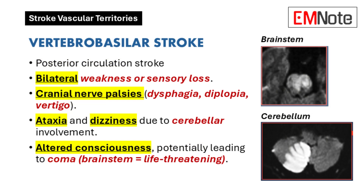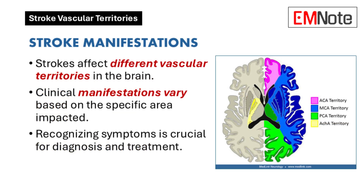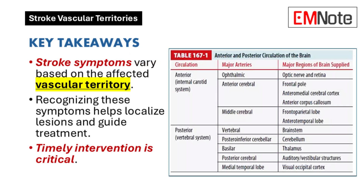Finally, let's discuss vertebrobasilar strokes. These affect the back of the brain, including the brainstem. Because this area controls vital functions, these strokes can be life-threatening — we're talking about things like breathing and heart rate. You might also see double vision, difficulty swallowing, or problems with balance and coordination. Recognizing these patterns is truly crucial for healthcare providers, because quick recognition allows for faster treatment, and in stroke, time is of the essence.